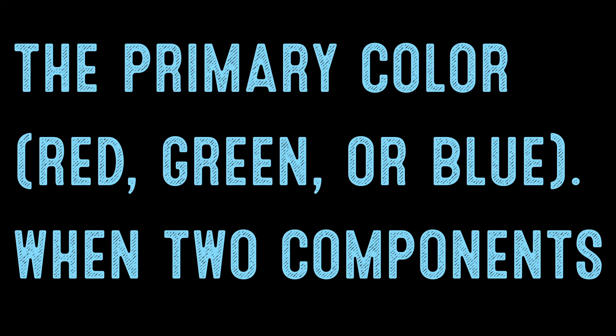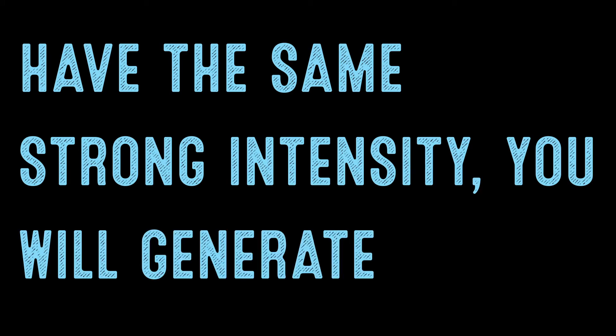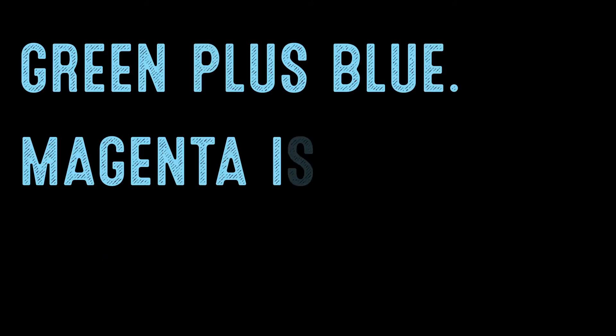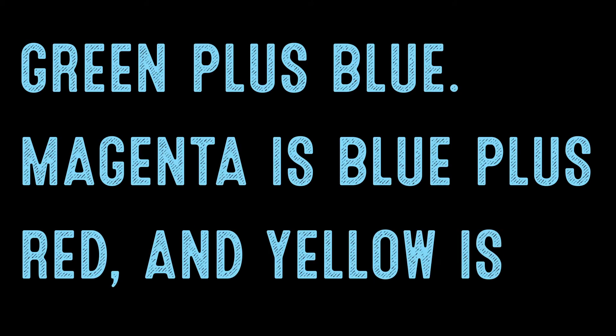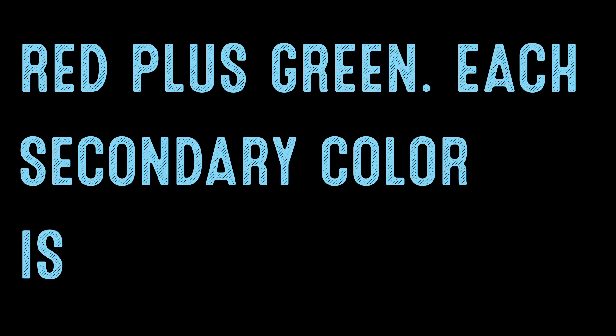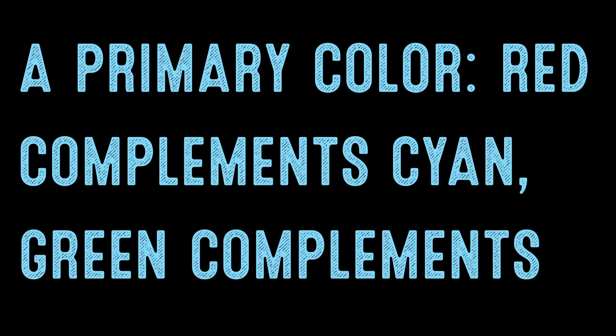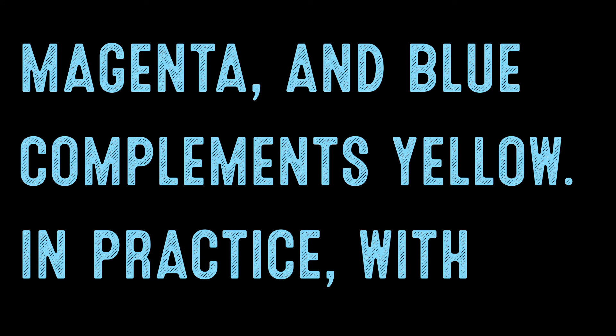When two components have the same strong intensity, you will generate a secondary color: cyan, magenta, or yellow. Cyan is green plus blue, magenta is blue plus red, and yellow is red plus green. Each secondary color is a complement to a primary color. Red complements cyan, green complements magenta, and blue complements yellow.